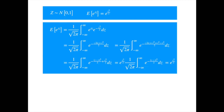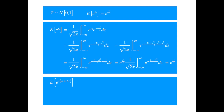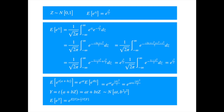Recall that if z is standard normal, then a plus b times z is also normal, but with mean a and variance b squared. So we can write the moment generating function of a non-standard normal as follows. Taking the constant out of the expectation and using the moment generating function of the standard normal — pretending t is replaced by t times b — we get the result. Now here comes the trick: the exponent t times (a plus b times z) is like a normal distribution with mean a times t and variance b squared times t squared. We can jump to the conclusion that the expected value of the exponential of a normal variable is the exponential of its mean plus half its variance. This result will come in very handy when we derive the mean, variance, and covariance of the geometric Brownian process.